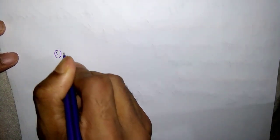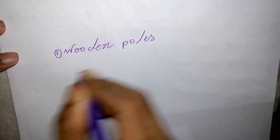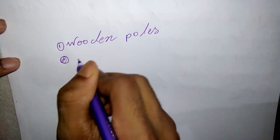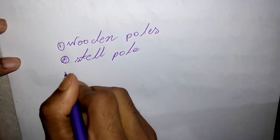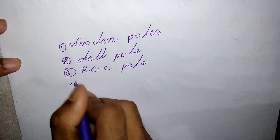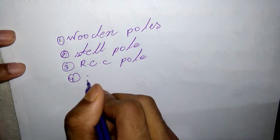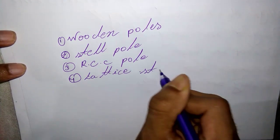There are various types of line supports. The main types are: first, wooden poles; second, steel poles; third, RCC poles; and fourth, lattice steel towers.